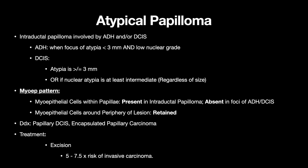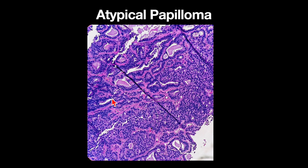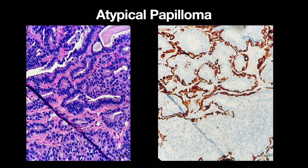Your differential diagnosis is papillary DCIS and encapsulated papillary carcinoma. Treatment is excision, as there is a 5 to 7.5-fold risk of invasive carcinoma. Here we have a region of intraductal papilloma with hyaline stroma — you can imagine there will be myoepithelial cells if you look closely here. And then this region is more monotonous; it has a cookie-cutter shape and some nuclear atypia. With the myoepithelial stains, you can see the myoepithelial cells staining within the intraductal papilloma, and in the foci of DCIS it is absent.